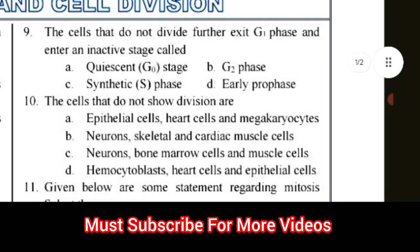Question number 9: The cells that do not divide further exit G1 phase and enter an inactive stage called? Options: A) quiescent G0 stage, B) G2 phase, C) synthetic S phase, D) early prophase. The correct answer for question number 9 is option A — quiescent G0 stage.